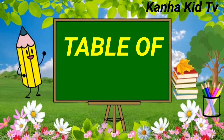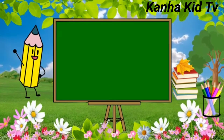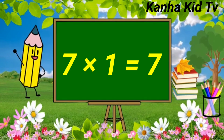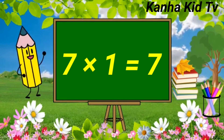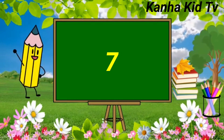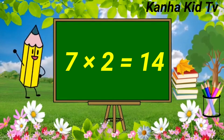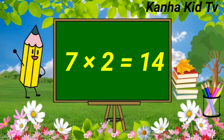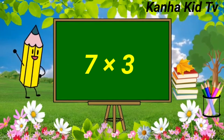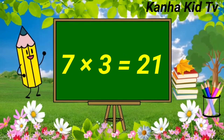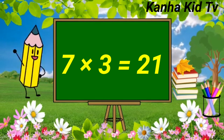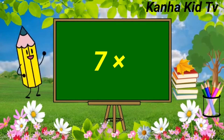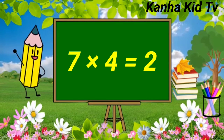Table of 7. 7 ones are 7. 7 twos are 14. 7 threes are 21. 7 fours are 28.